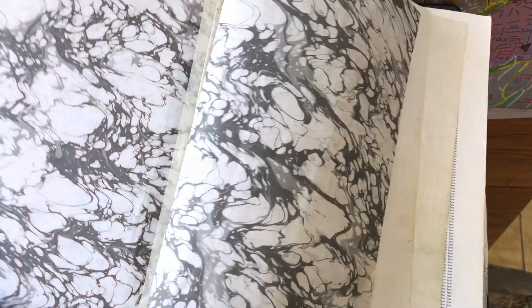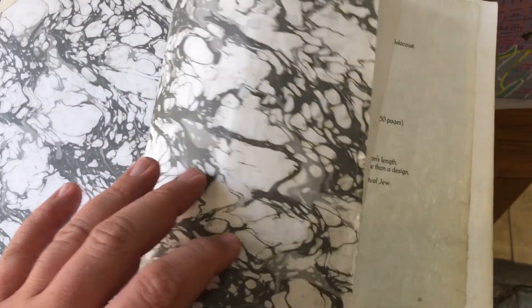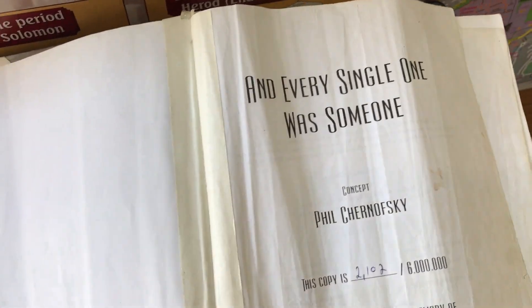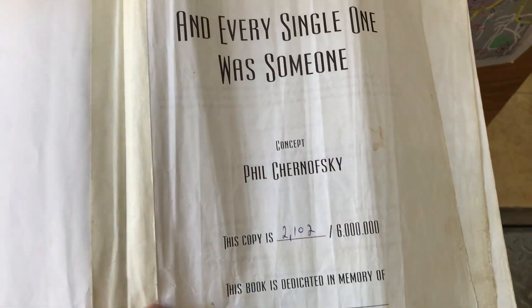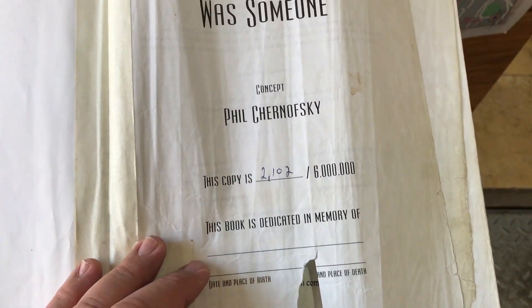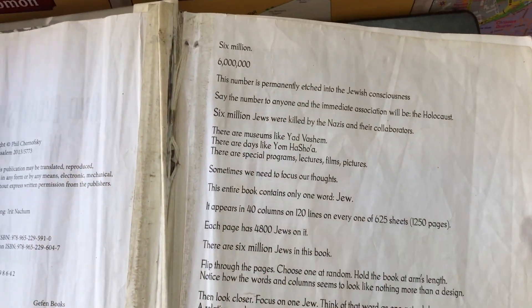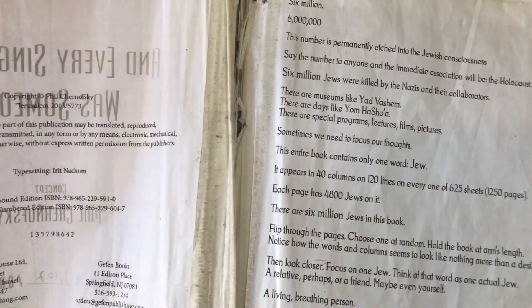Six million Jews. What does it look like? Just read the front page. I can't read English though.